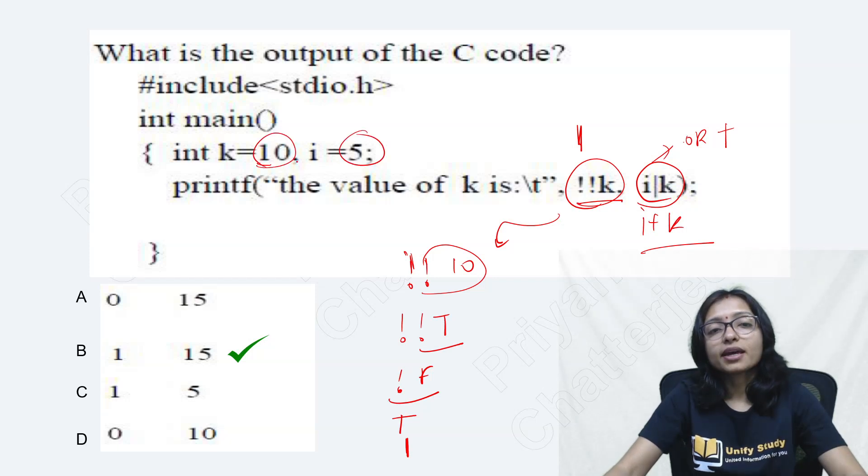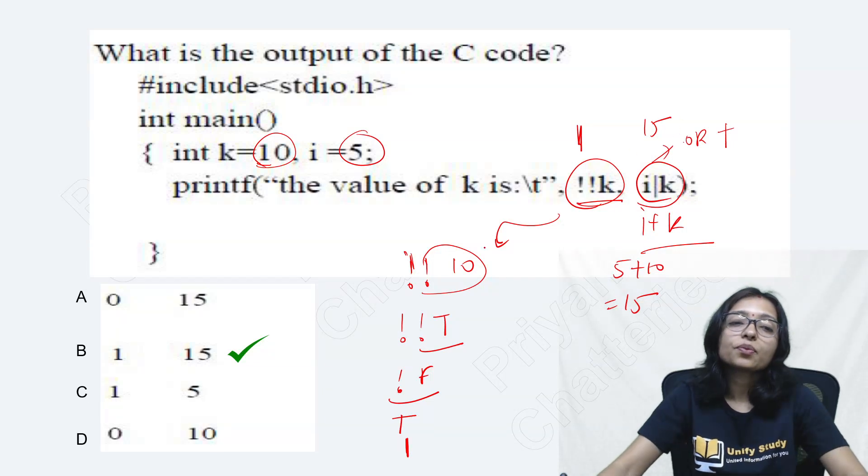Here it is I plus K. This will work as I plus K. What is the value of I? 5. What is the value of K? Is 10. So it will be 5 plus 10, that means 15. That is why here you are getting 15. So what is going to print here? 1 and 15.